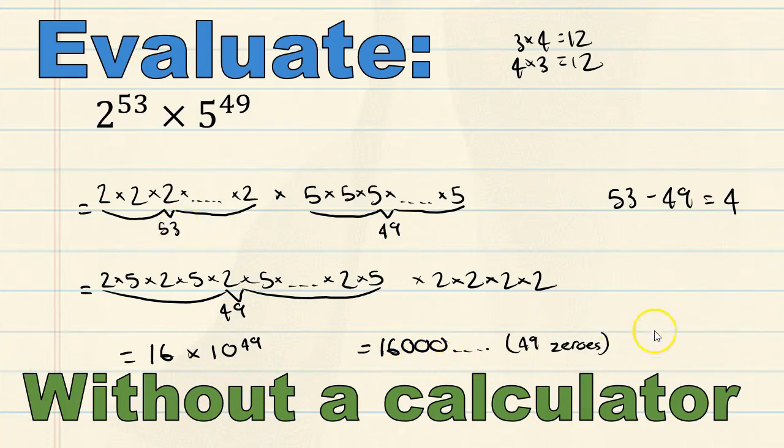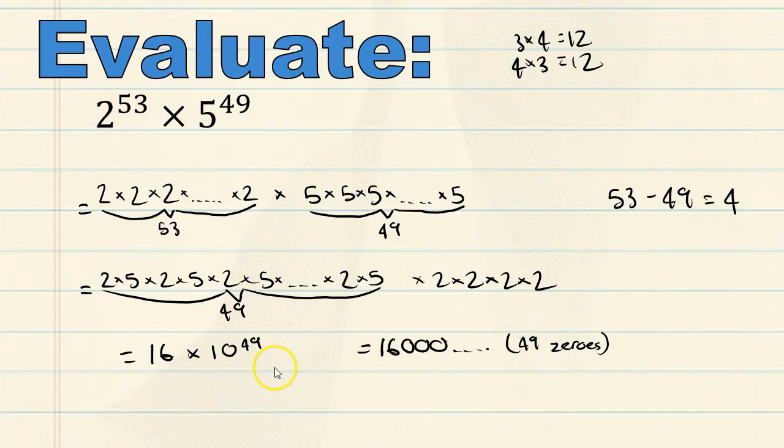Now, the problem we're faced with here is that we know the solution, but we still can't write it down. It would take too long to write down 49 0s. What do we do in this situation? Well, we have to use something known as scientific notation.